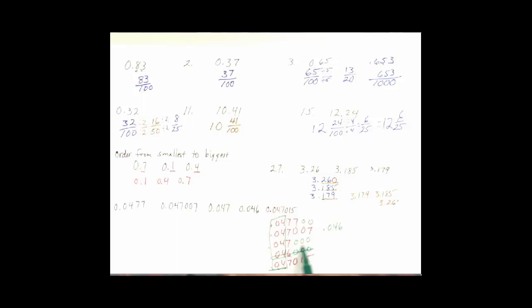And then we have 7,000. That's going to be before 7,007. So we're going to have .047. That's again the original number. Then we're going to have this one, so we cross that one out.